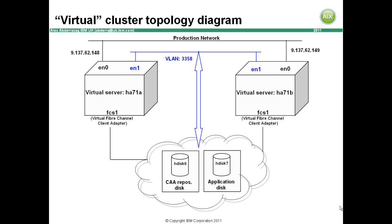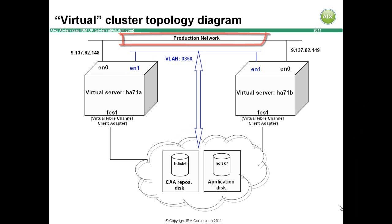Remember it's always important to have the latest service pack installed before starting. As each node is virtual, we only need one ethernet adapter per node. This is shown on the diagram as the production network.